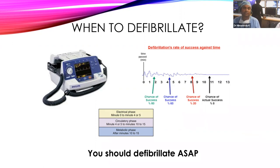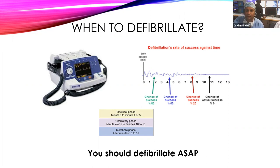Overdriving pacing: cardiologists use this concept when tachycardia is not relieved by chemical cardioversion, and in VT or SVT patients where electrical cardioversion also fails to achieve sinus rhythm. The cardiologist will then use overdriving pacing to achieve sinus rhythm. This is a valid and useful concept.